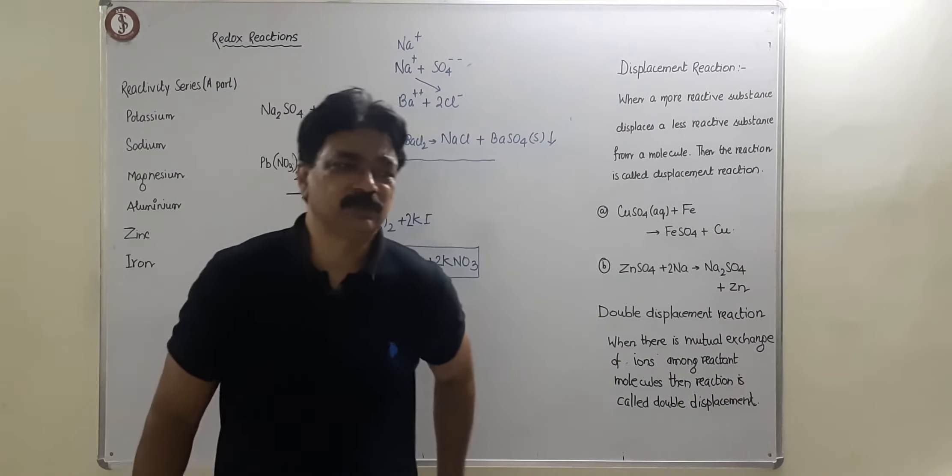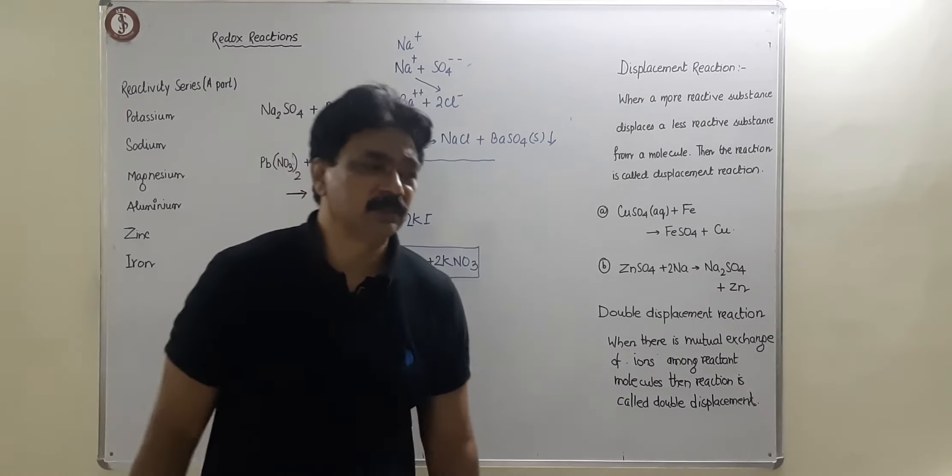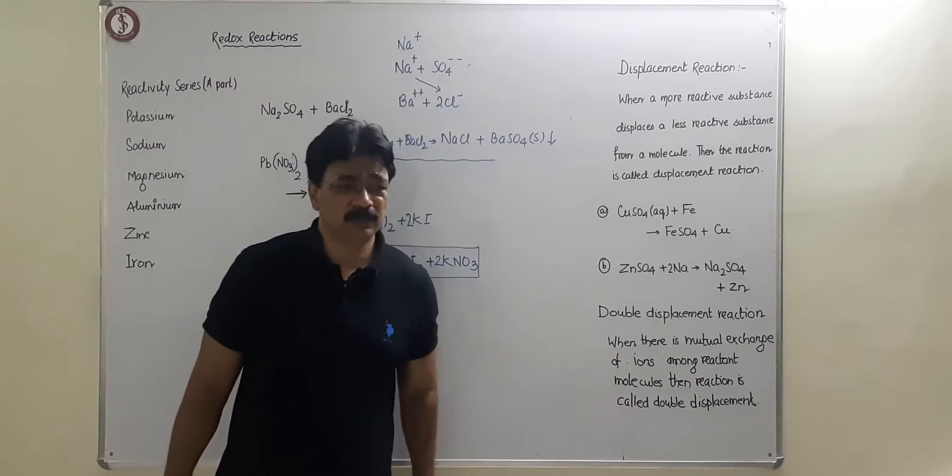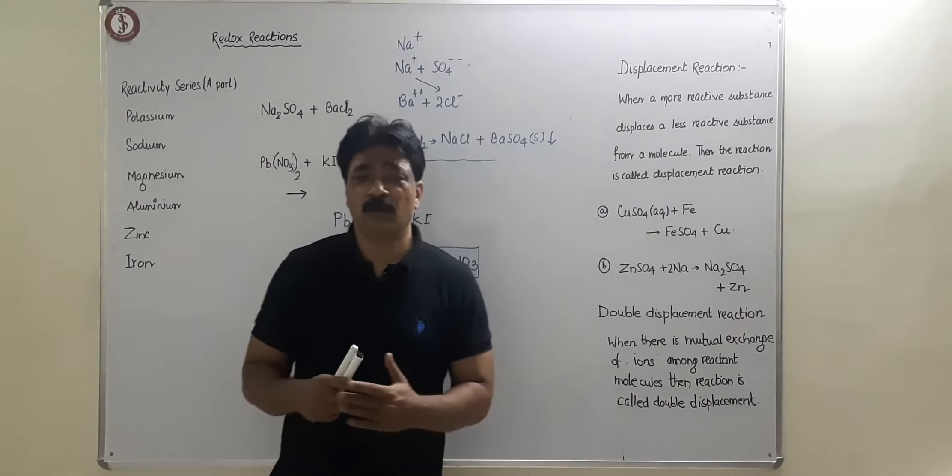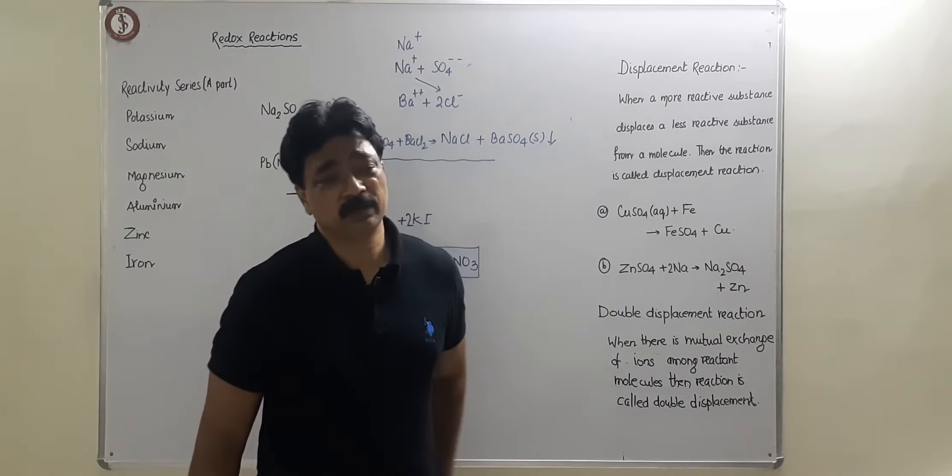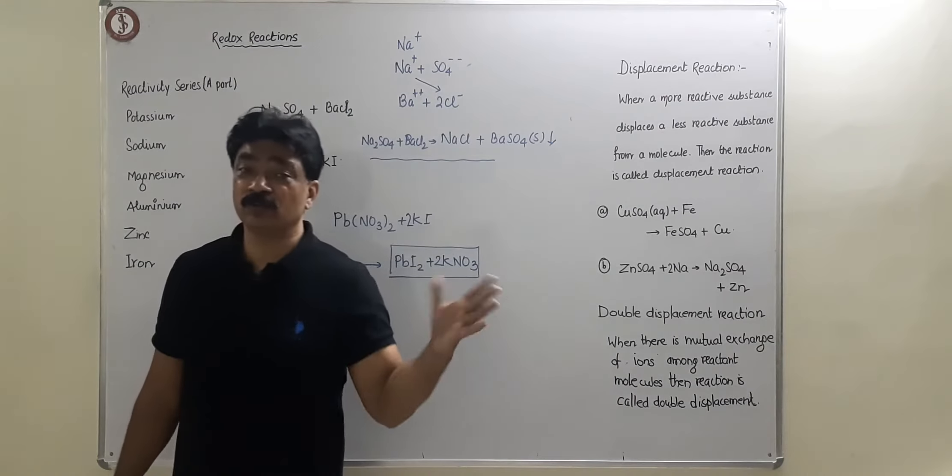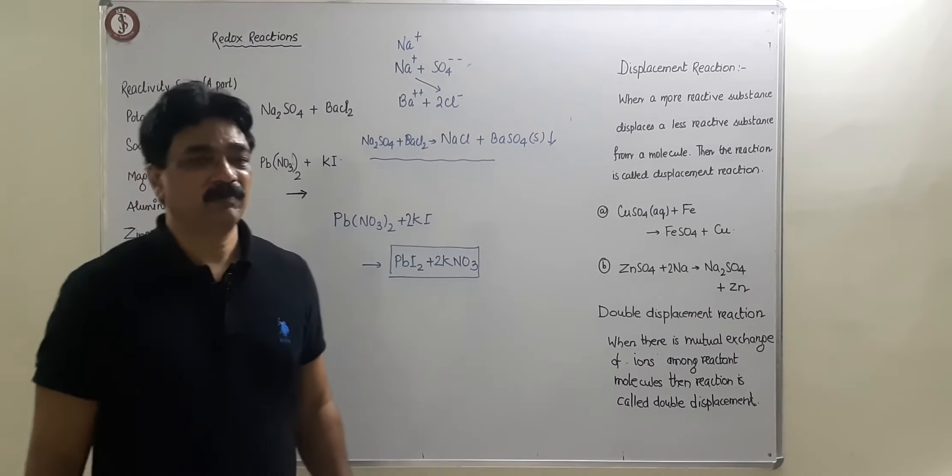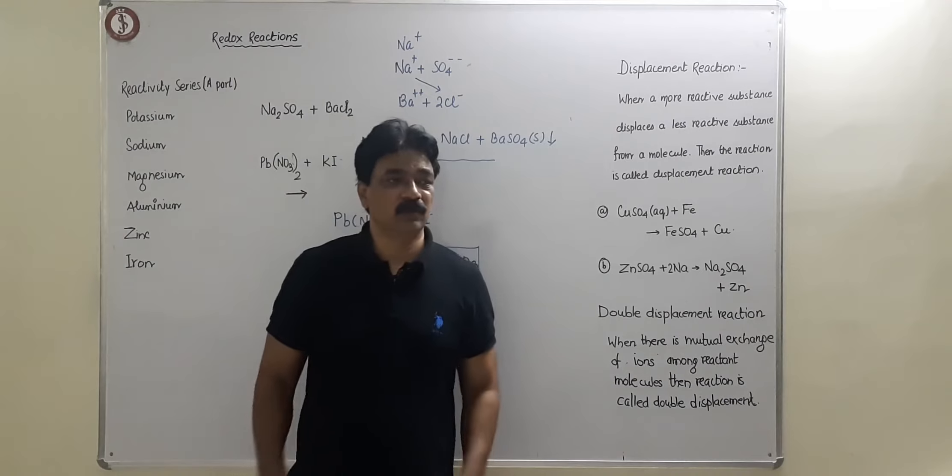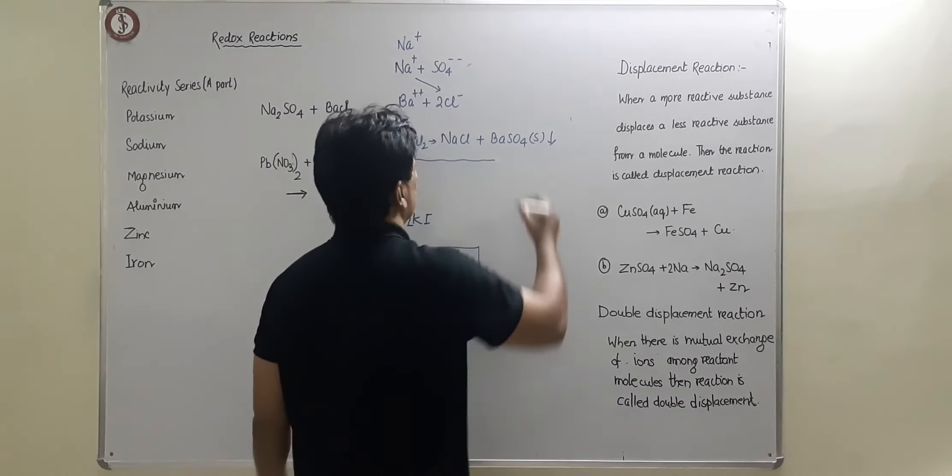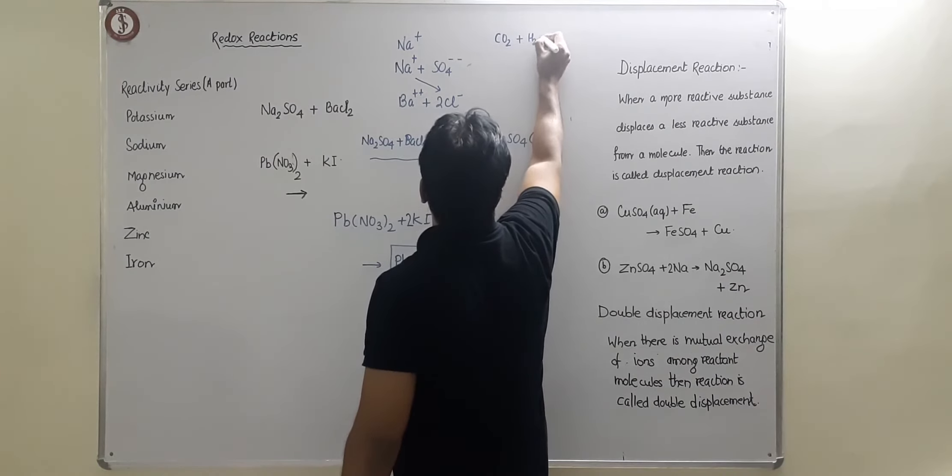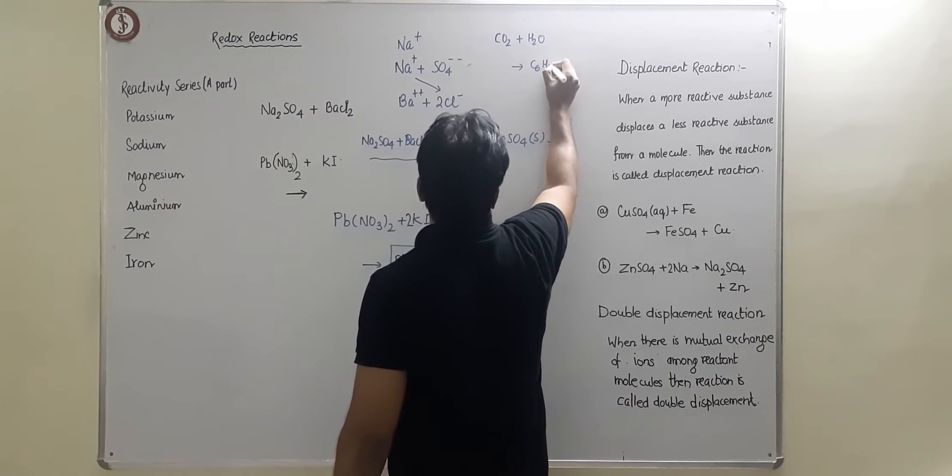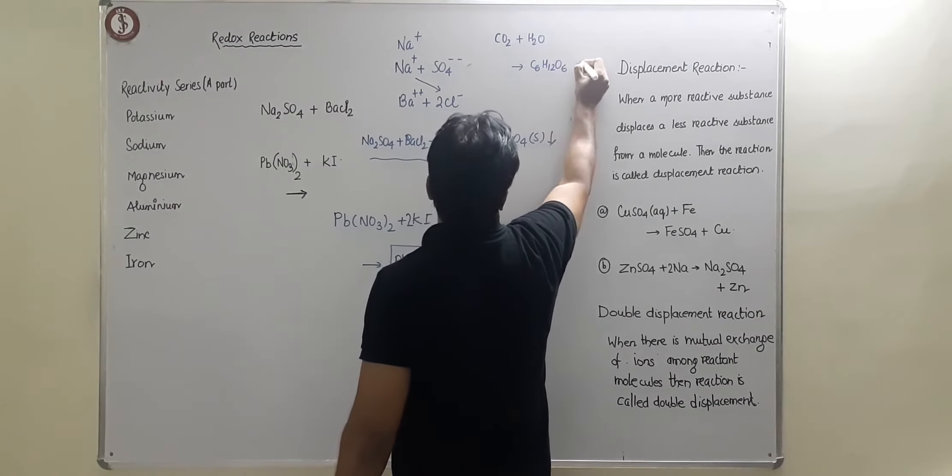We also have photochemical reactions. For example, in certain reactions, if light falls, like silver chloride, if light falls then it decomposes to form silver and chlorine separately. So there are certain reactions like photosynthesis which is a photochemical reaction in which sunlight is needed. You know what is the reaction written for photosynthesis? CO2 from atmosphere plus H2O and we get C6H12O6 plus we get oxygen.